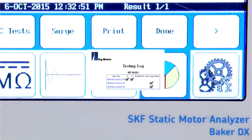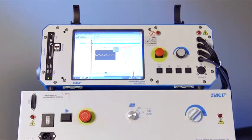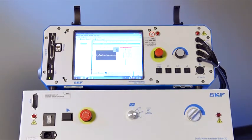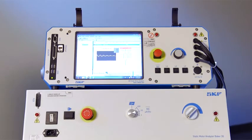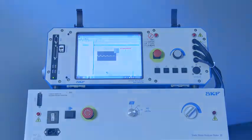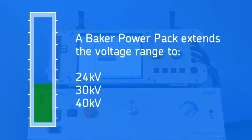Reports can also print directly from the DX. Company logos can be added to the report. For testing of very large motors or form wound coils, the voltage range of the SKF static motor analyzers can be extended using a power pack. These solutions boost the output voltage to 24kV, 30kV, or 40kV for the ground wall insulation DC tests and the turn-to-turn insulation surge test.